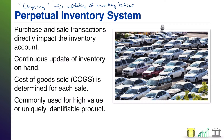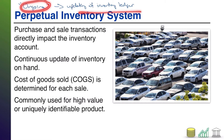Basically, under a perpetual inventory system, every time a company buys inventory and every time a company sells inventory, that is going to be journalized and then posted to the inventory account. In other words, you buy inventory — inventory up. You sell inventory — inventory down, with every single transaction that occurs. So it's an ongoing update to the inventory ledger.